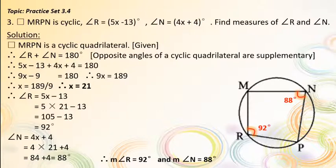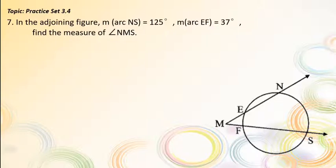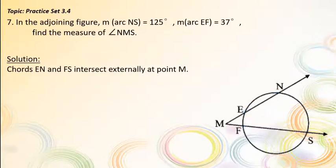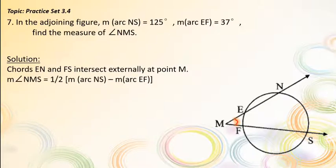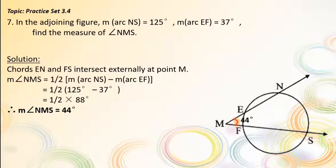Question number 7. In the adjoining figure, measure of arc NS = 125° and measure of arc EF = 37°. Find the measure of angle NMS. Solution: In this figure, chords EN and FS intersect outside the circle at point M. Therefore, measure of angle NMS = half of (measure of arc NS − measure of arc EF) = half of (125° − 37°) = half of 88°. Therefore, measure of angle NMS = 44°.